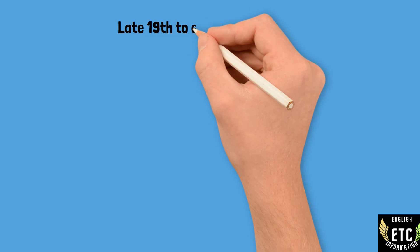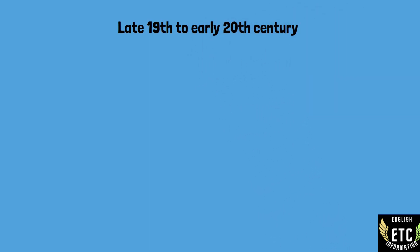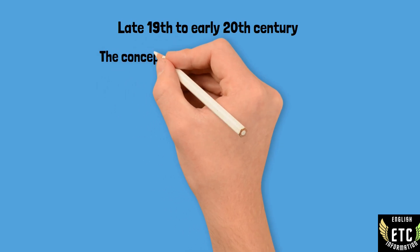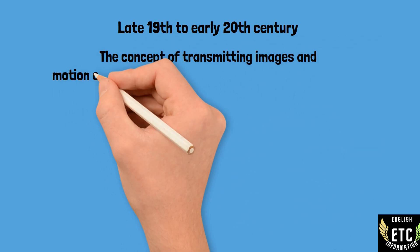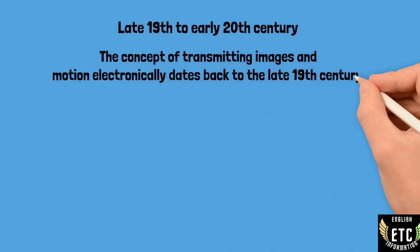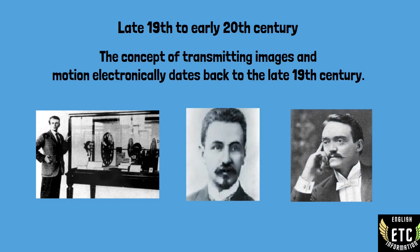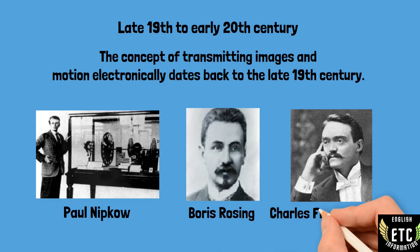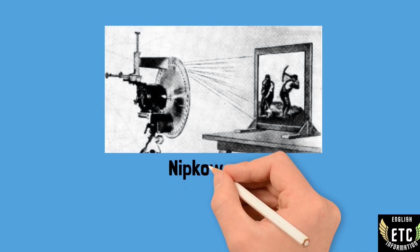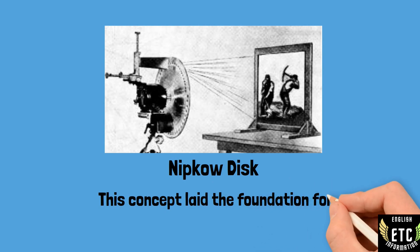The history of television is an interesting journey involving the contributions of various inventors and technological advancements. If we talk about early concepts and mechanical television, the concept of transmitting images and motion electronically dates back to the late 19th century. Inventors such as Paul Nipkow, Boris Rosing, and Charles Francis Jenkins developed early mechanical television systems. Paul Nipkow's rotating disc, known as the Nipkow disc, played an important role in the scanning and transmission of images. This concept laid the foundation for the development of television technology.